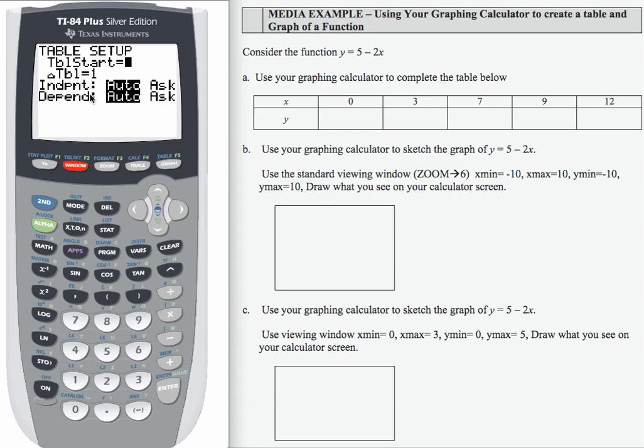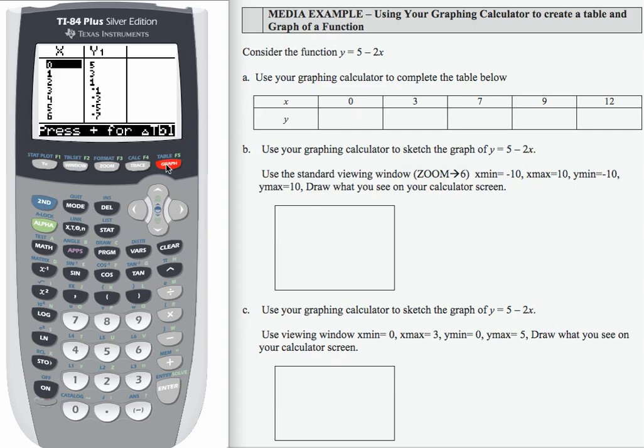My independent and dependent variable, that's the input and output, are automatic. This is what I want. So, I'm going to access table by pressing second, table, and then I'm going to read the outputs for the inputs that I need for my table over here.